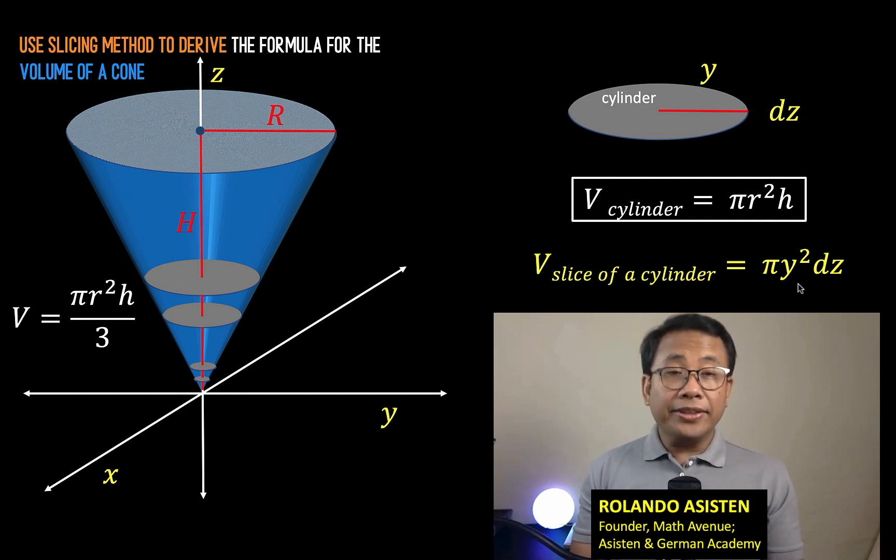Now, our problem here is there are two variables: we have the variable y and we have the variable z. So let's represent this y in terms of z. Going back to our cone, notice that if I draw this line, then that line can represent the distance from the z-axis going to the line. And if you know the equation of this line, then we'll be able to have a representation for this radius.